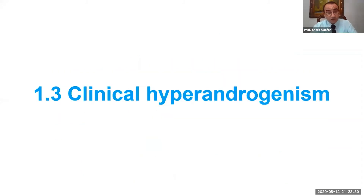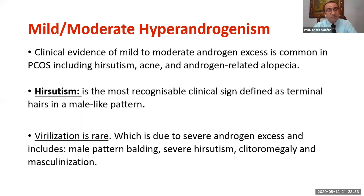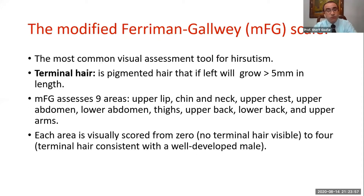Regarding clinical hyperandrogenism, we have mild to moderate clinical hyperandrogenism in these cases — not severe hyperandrogenism, which is named virilization. Virilization is very rare in PCOS; actually it's not present in PCOS. The most common symptom and sign is hirsutism, which is recognizable male-pattern terminal hair. Terminal hair is defined as pigmented hair that can grow to more than 5 mm if not removed. The only approved way to assess it is the modified Ferriman-Gallwey scale, covering nine areas: upper lip, chin, neck, upper chest, upper abdomen, lower abdomen, thigh, upper back, lower back, and upper arms.